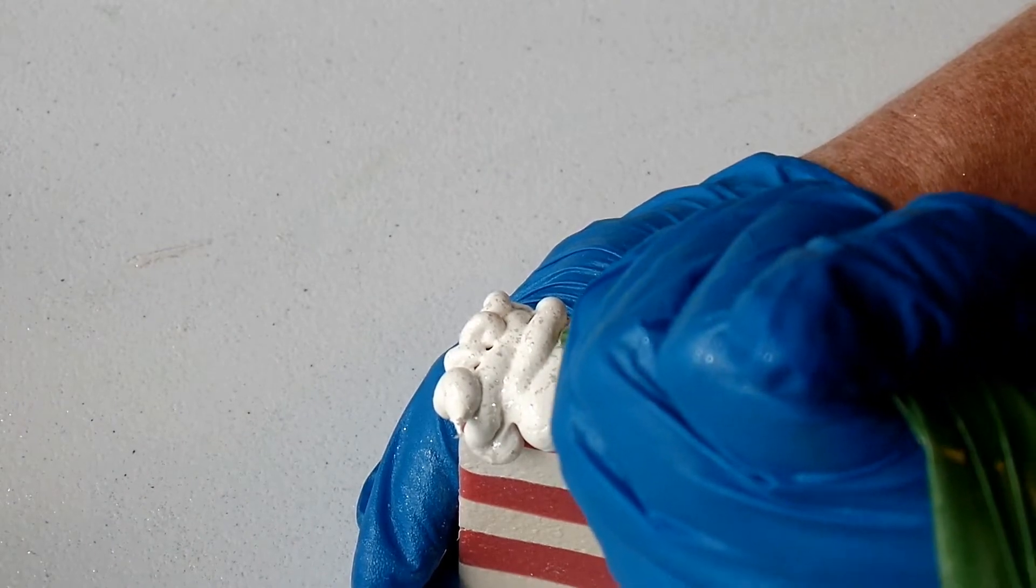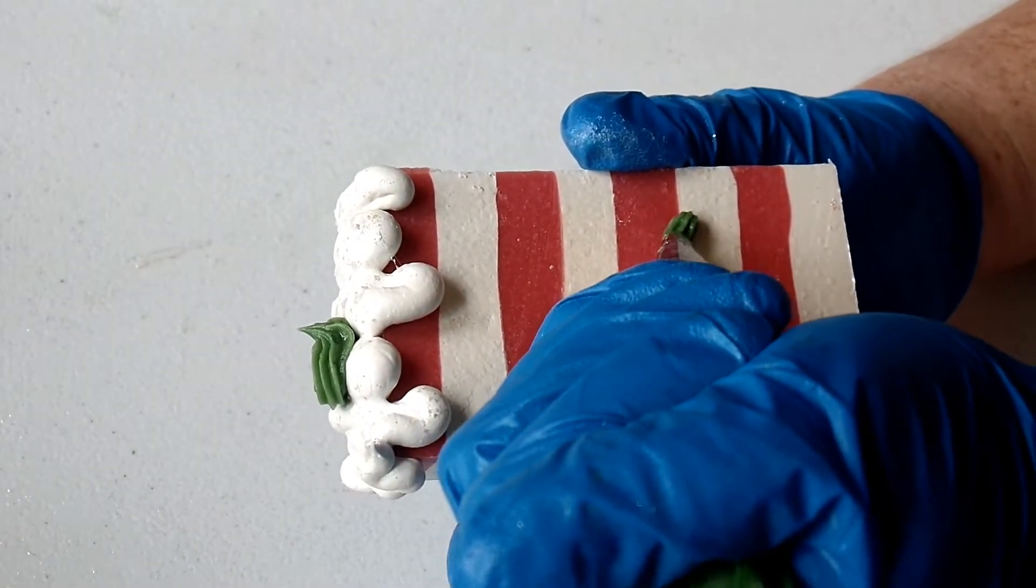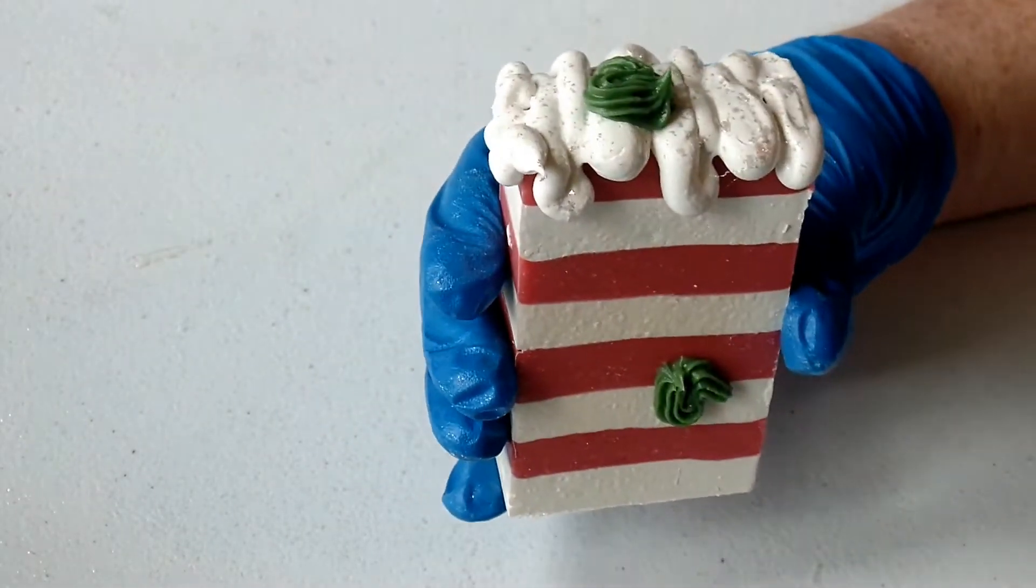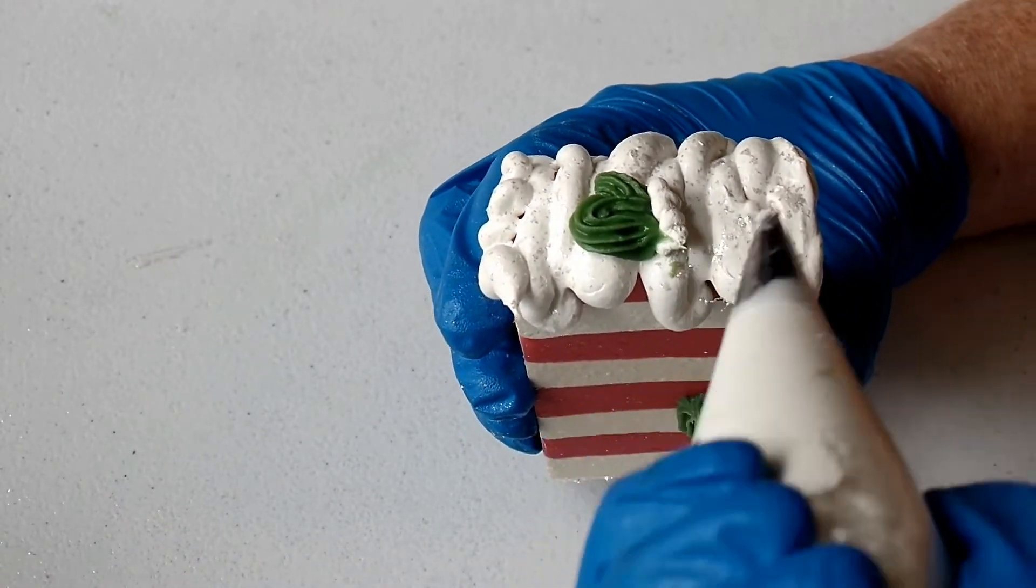For the mitten, first I'm going to pipe the thumb and then I'm going to pipe the rest of the part of the hands. And then we need to pipe the trim on and then I'm going to pipe the string on to connect it.